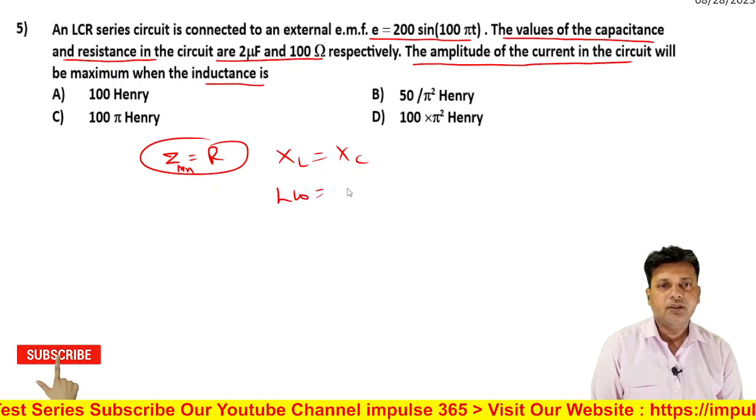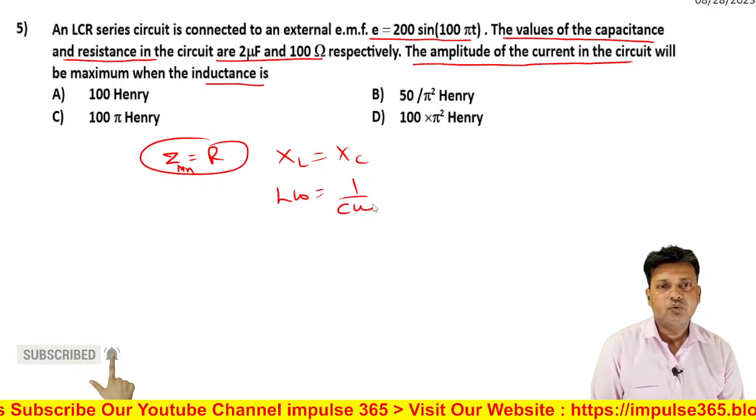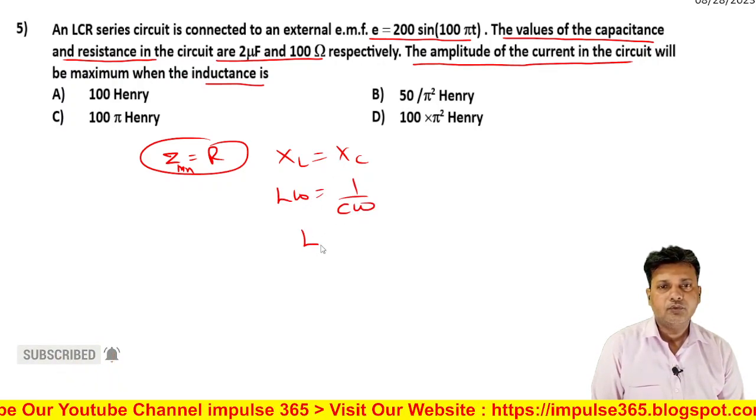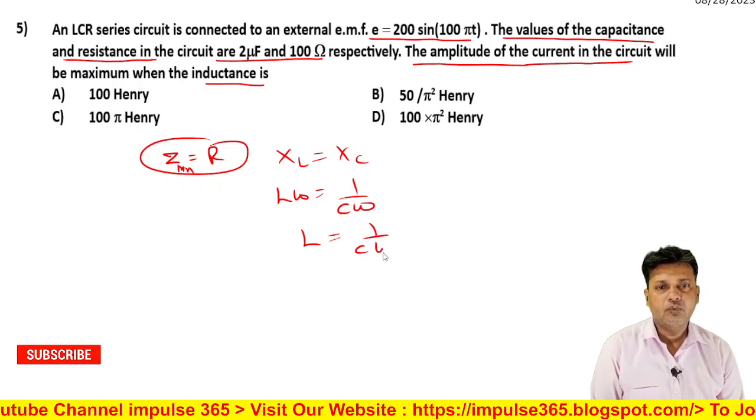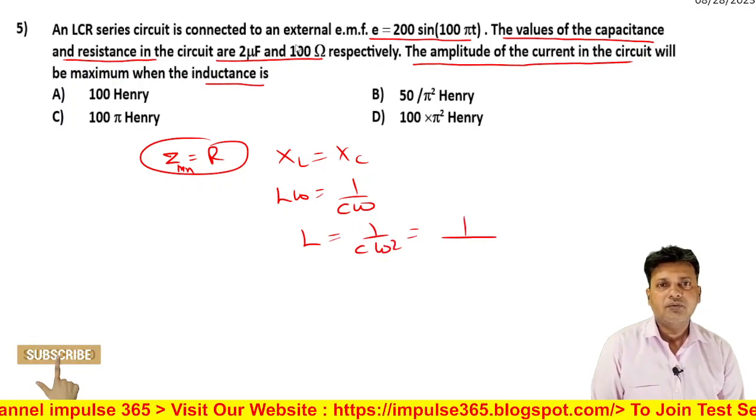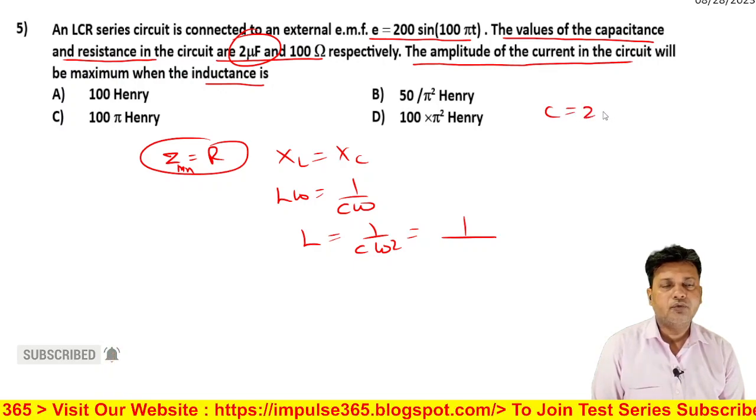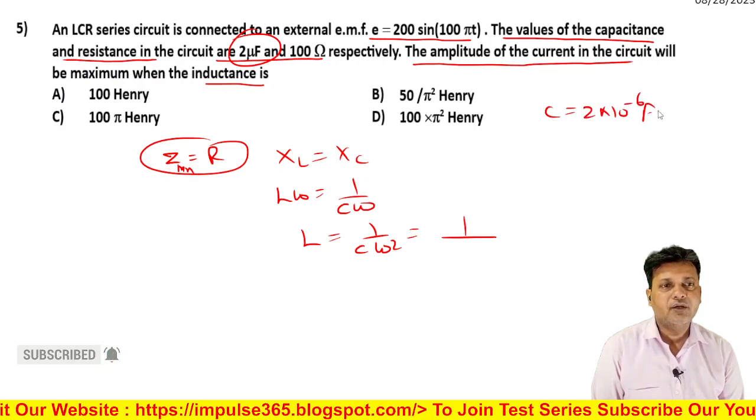So we have ωL = 1/(Cω). Rearranging, L = 1/(Cω²). The given value of capacitance C is 2 microfarad, which is 2×10⁻⁶ farad.